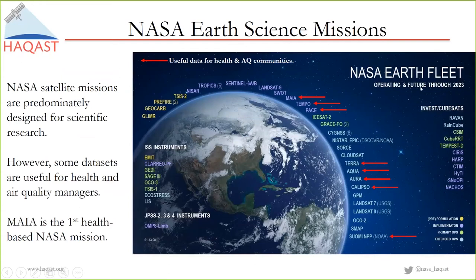A lot of people don't know that NASA has an Earth observing system — a fleet of satellites, anywhere between 20 and 30 circling the Earth, observing the cryosphere, biosphere, lithosphere, and the atmosphere, including air pollution. I've highlighted a few satellites useful for health and air quality managers. The Aura satellite — I'm actually project scientist for this mission — has goals to monitor the health of the ozone layer and air pollutants like nitrogen dioxide and sulfur dioxide. The satellite launched in 2004.